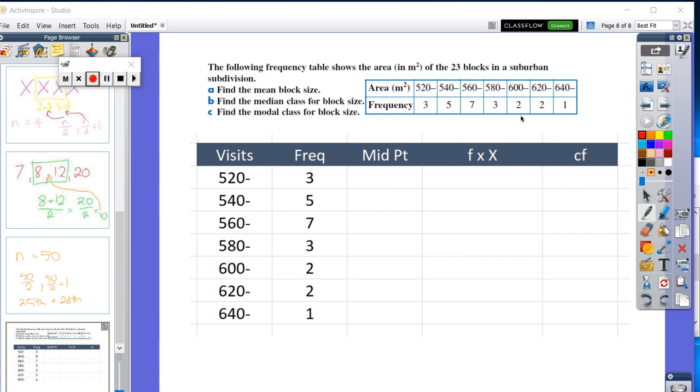Now, when there is not an exact number, we actually have to create a midpoint. Now, you just need to look at where does this one here start. It starts at 520 and it finishes at 539.9999999999, close enough to 540. So, what we actually do is we would say the midpoint of this range is 530. For this one, it's 550, 570, 590, 610, 630. And although there isn't a top, we'll still call it 650 there.